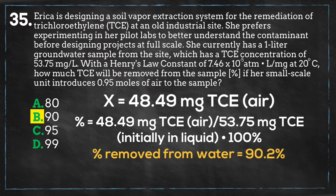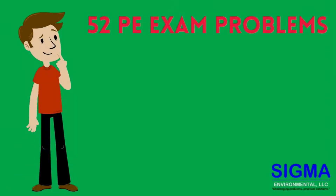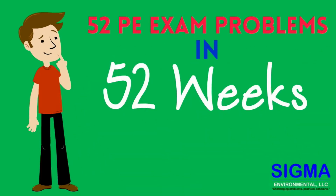Erica is making a wise choice in using soil vapor extraction for the removal of this contaminant. TCE is highly volatile and will be readily treated with soil vapor extraction, provided that the groundwater medium is highly permeable and has a low carbon content. Large volumes can be readily treated, cleanup times are fairly short, environmental impacts are low, and costs are typically much lower with soil vapor extraction compared to other remediation technologies. Join us for episode 36 of 52 PE Exam Problems in 52 Weeks.